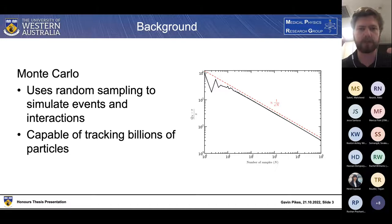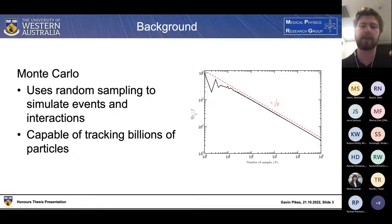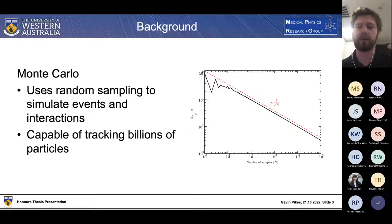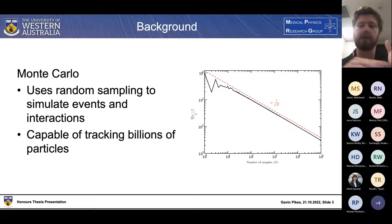We track particles as they interact and scatter through our medium until they either leave our area of geometric interest or fall below a threshold energy. In doing this, we're able to track these microscopic particles on a stochastic scale such that we can then collate these particles together to form a deterministic macroscopic description of radiation behaviour on a larger scale. This requires tracking billions of particles — in my case, between 3 billion and 30 billion.